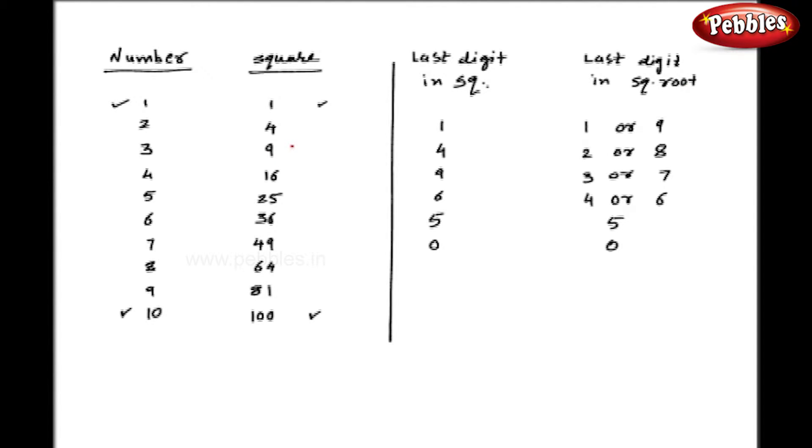If you pay attention carefully to the first table, you can see that whenever the square has number 1 as a last digit, you can easily observe that in the square root, it will be 1 or 9 as a last digit.